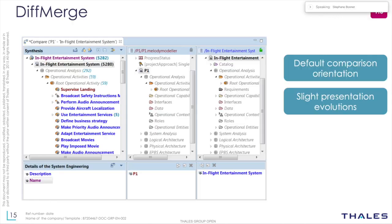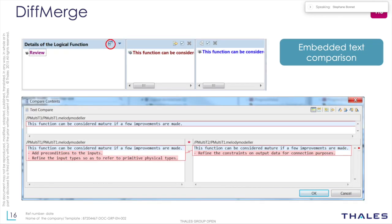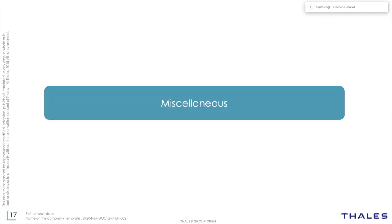For diff merge, there have been a few enhancements. The default comparison is now oriented, and we've slightly modified the way things are presented — the amount of differences is now displayed with a specific color. We've also added an embedded text comparison: if the review of an element is different in two versions of the model, you now get a window that allows comparing the text in both versions side by side.